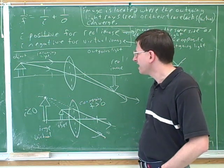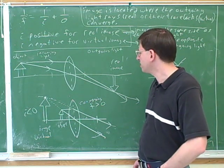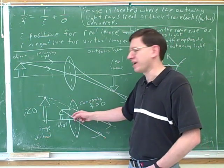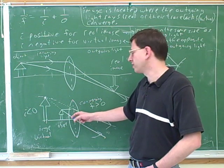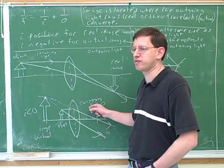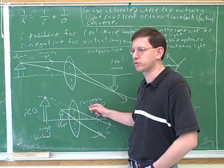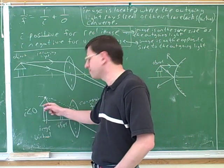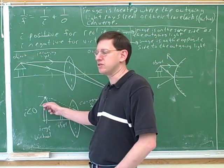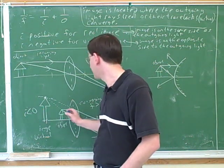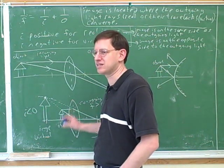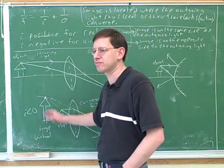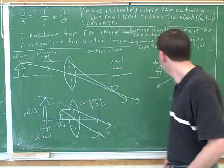This is actually a very common mistake, though it shouldn't be, because the focal length is a property of the device. When you look at the device, you decide whether you have a positive or negative focal length. But the image distance is a property of the image — you can't tell whether I is positive or negative by looking at the device. You tell whether I is positive or negative by looking at the image.